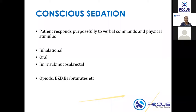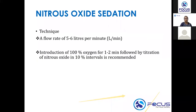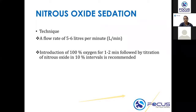Moving on to nitrous oxide sedation, certain values are very important. In nitrous oxide sedation, a flow rate of five to six liters per minute of nitrous oxide is selected. You first give 100 percent oxygen for about one to two minutes, followed by titration of nitrous oxide in 10 percent intervals, which is what is recommended.